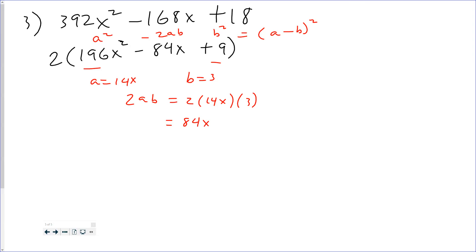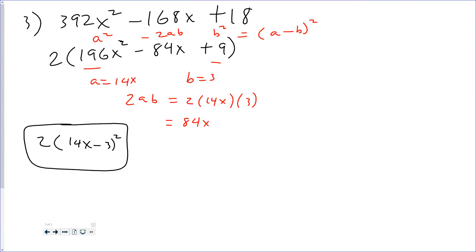Since this is a perfect square trinomial, it factors as a minus b all squared, which is 14x minus 3 all squared. This is also why you should always factor out your GCF first — if you hadn't, you'd have a terrible time finding pairs of factors of 392 and 18 that add up to negative 168. Any questions about that?